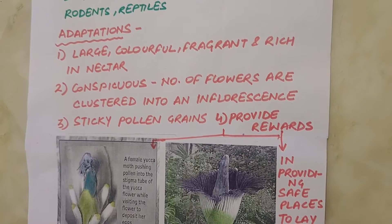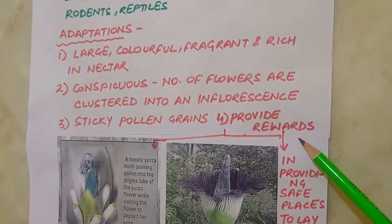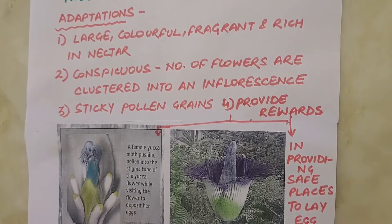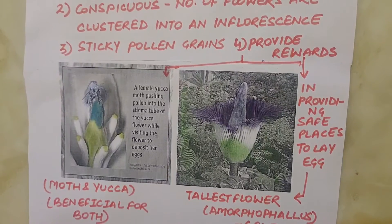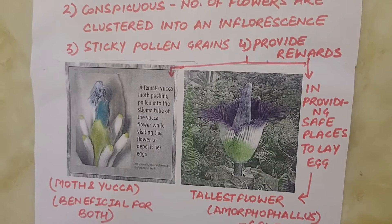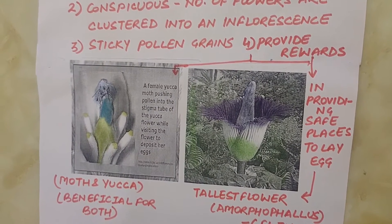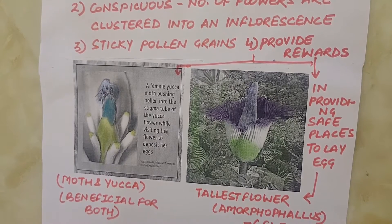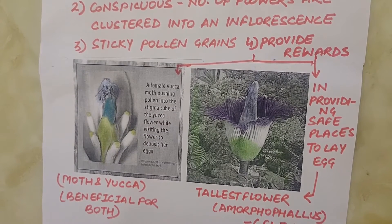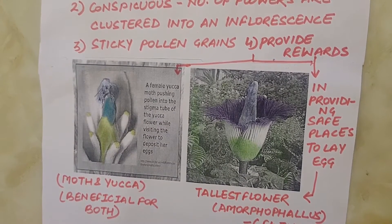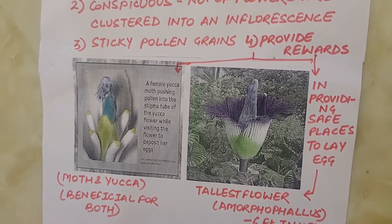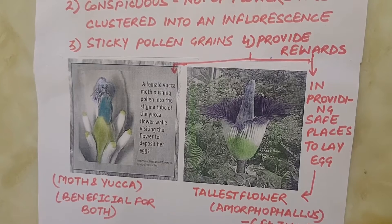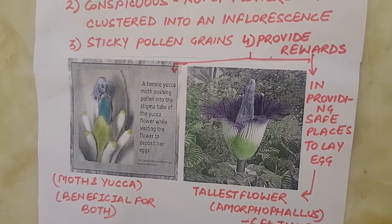To sustain animal visits, the flowers have to provide rewards. Nectar and pollen grains are the usual floral rewards. For harvesting the reward from the flower, the animal visitor comes in contact with the anthers and the stigma. The body of the animal gets a coating of pollen grains, which are generally sticky in animal-pollinated flowers. When the animal carrying pollen on its body comes in contact with the stigma, it brings about pollination.